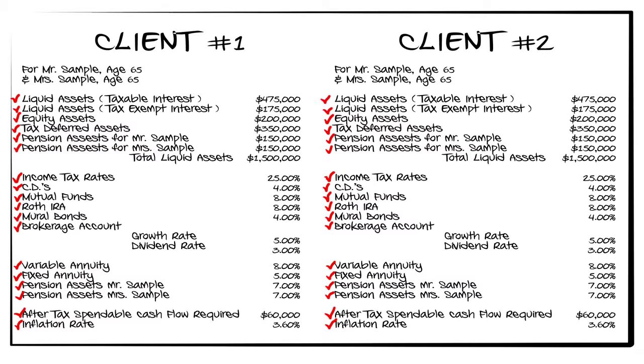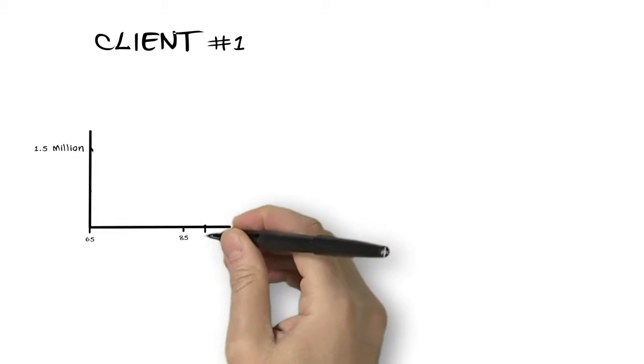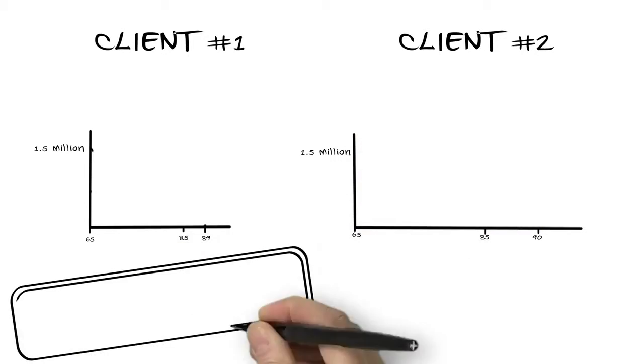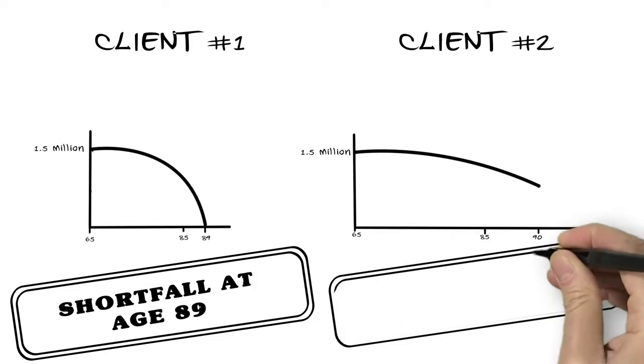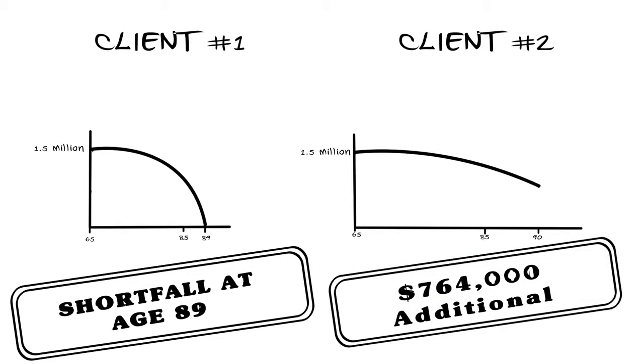So, it makes sense they would have the same financial outcomes, right? Actually, there is a clear difference. The client choosing to not apply liquid asset priority runs out of money at age 89. Conversely, the client that exercised liquid asset priority had a difference of $764,000 by age 90.